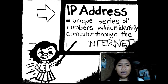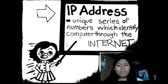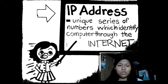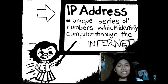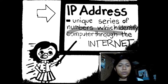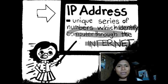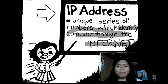Let's give a brief definition of IP address. An IP address is a unique series of numbers that identifies computers through the internet. It's like a series of numbers separated by dots, and its importance is that it identifies your computer on the internet. In other words, your IP address is like your name — it identifies you.